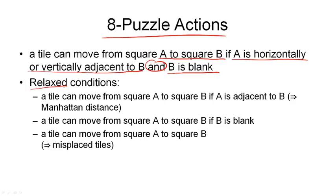If we drop the second part that B is blank, we end up with this heuristic here. And that tells us a tile can move from square A to B if A is adjacent to B. I've dropped the horizontally or vertically. And what we get there, of course, then,